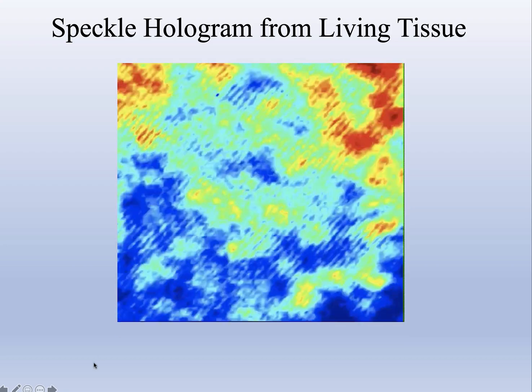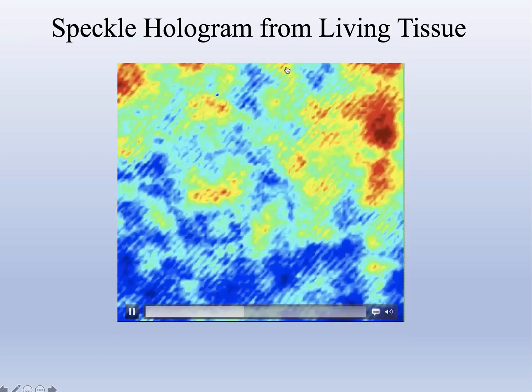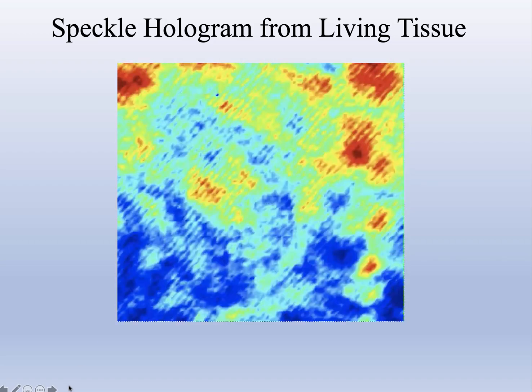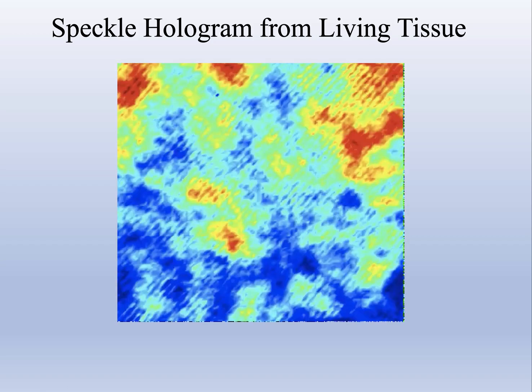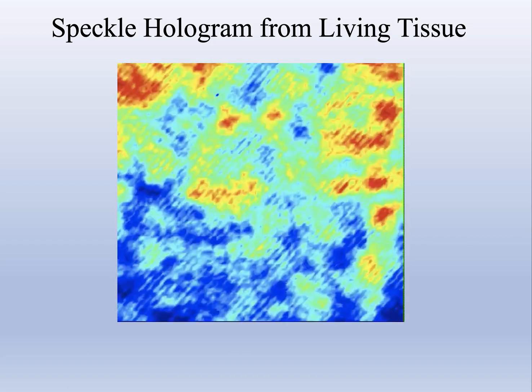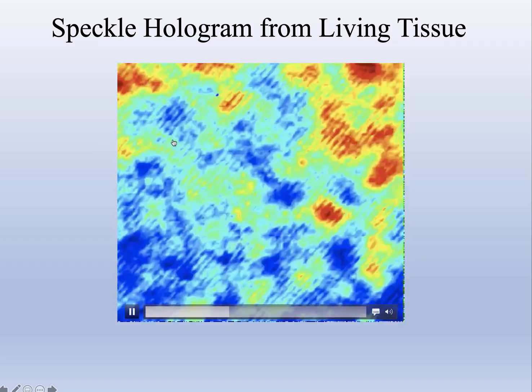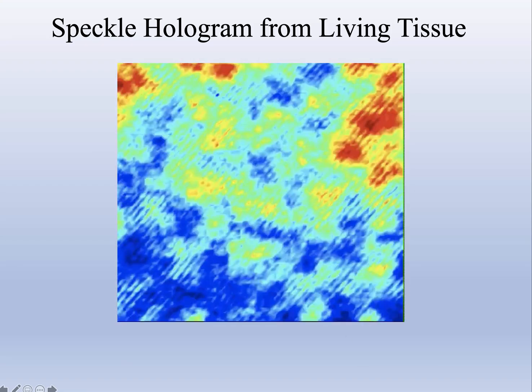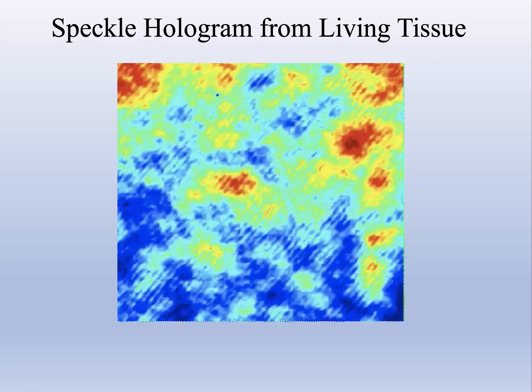This is actually a CCD chip - you're looking at intensities on a CCD chip. This is an infrared laser that is reflecting or scattering off of living tissue. We're also doing holography, so these stripes here are actually holographic fringes.